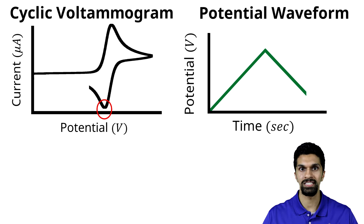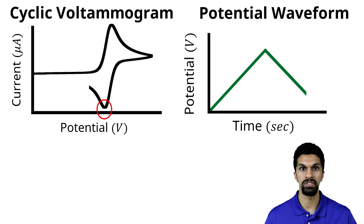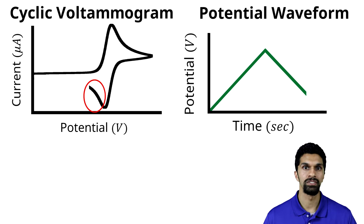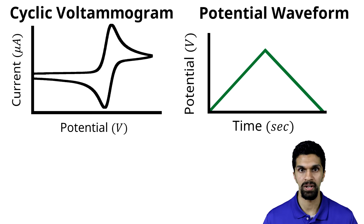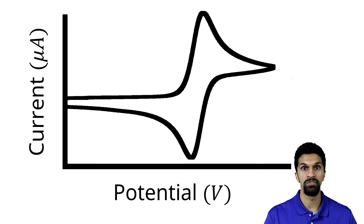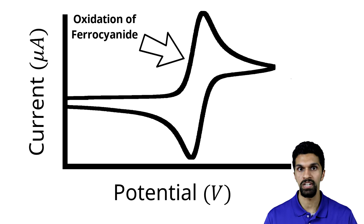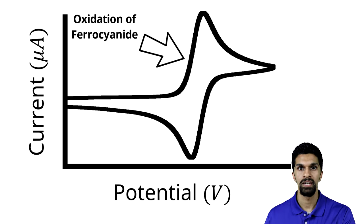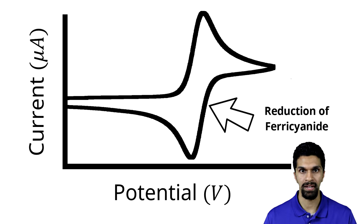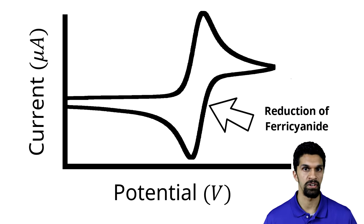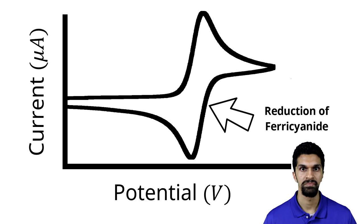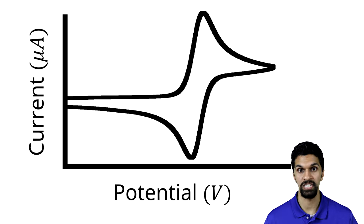As that layer of ferricyanide gets depleted, we start to see the current increase again and then complete our cyclic voltammogram. So the forward sweep contains the oxidation of ferocyanide to ferricyanide, and as we sweep the potential back, we get the reduction of ferricyanide back to ferocyanide. And that is a cyclic voltammogram.